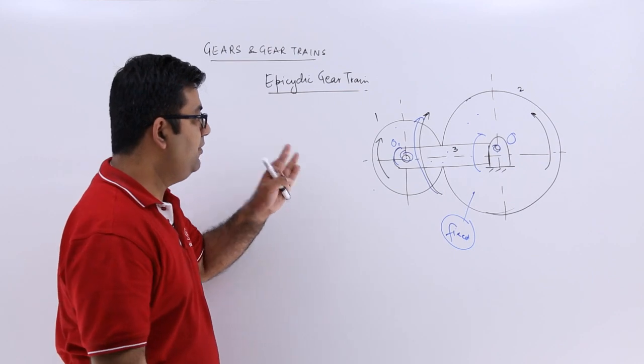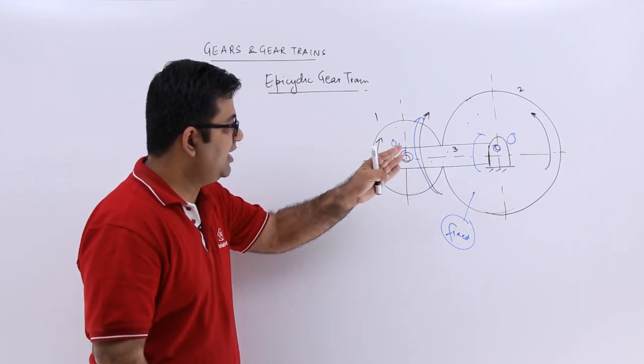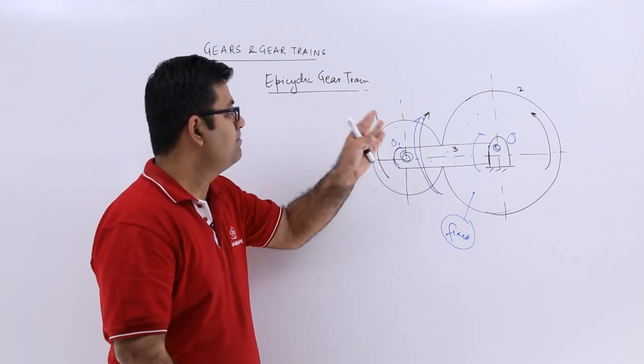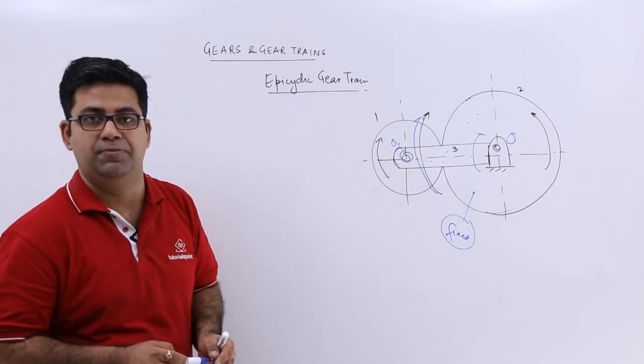So this is the meaning of epicyclic gear train - that is by fixing different components, you will get different configurations and resulting gear ratios.